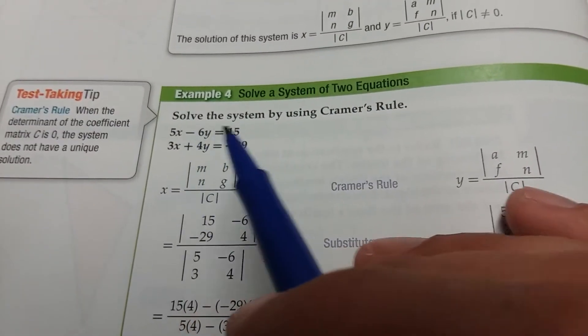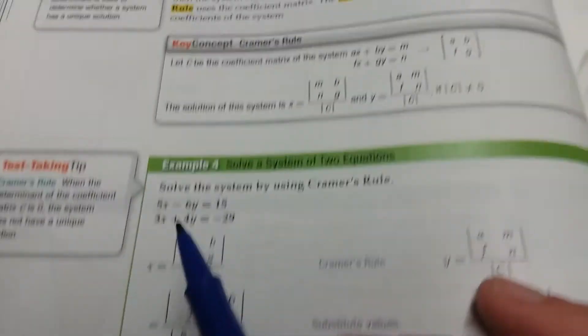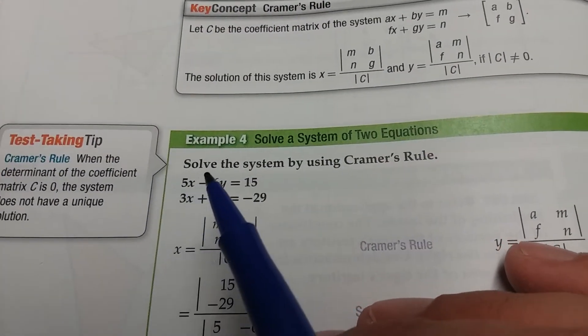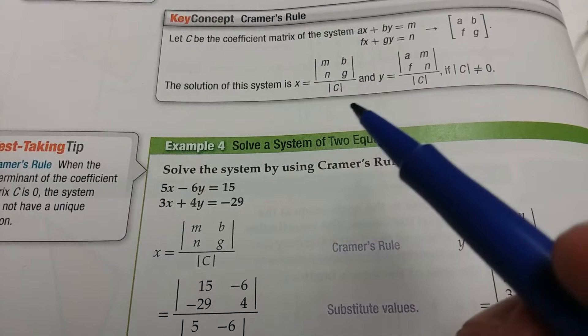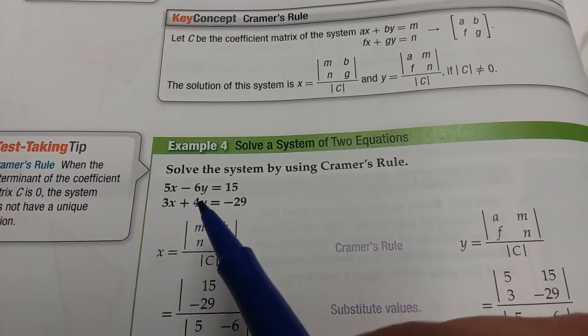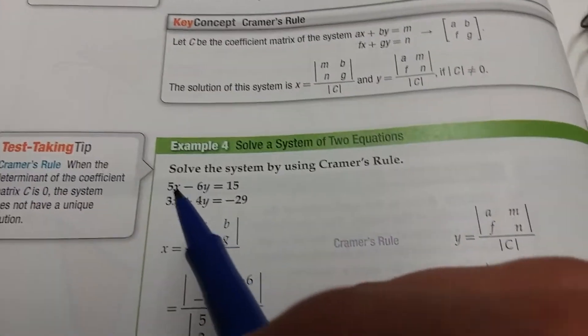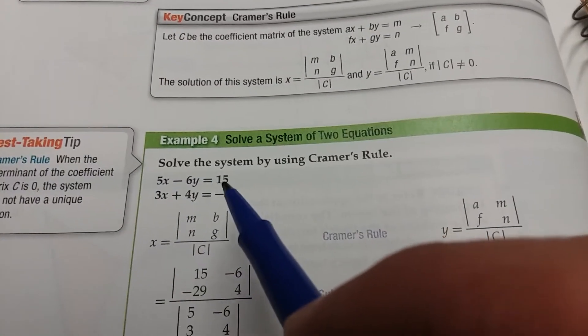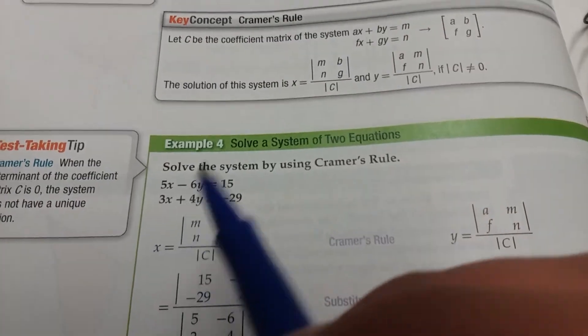Now they have to be in the form Ax plus By equals m and Fx plus Gy equals n. Okay, it has the xy on the left side and a number on the right-hand side.